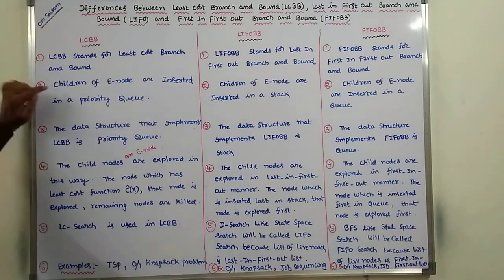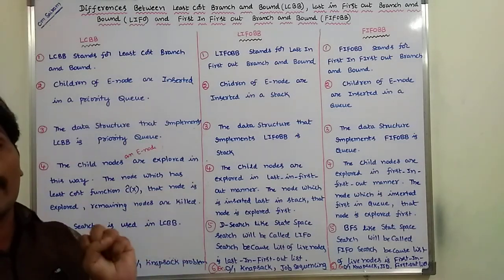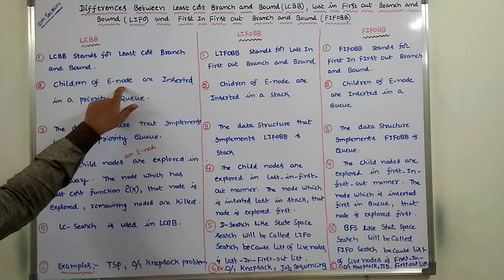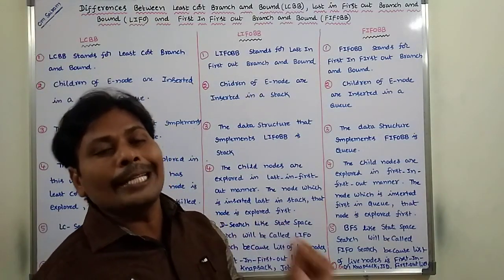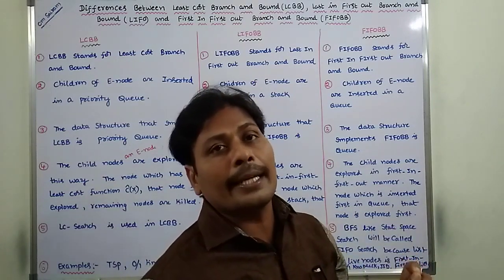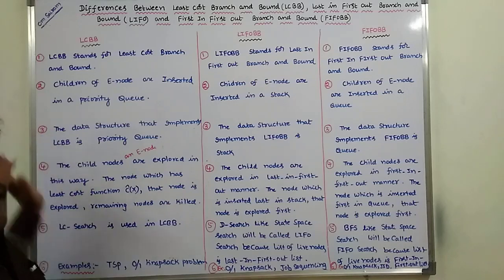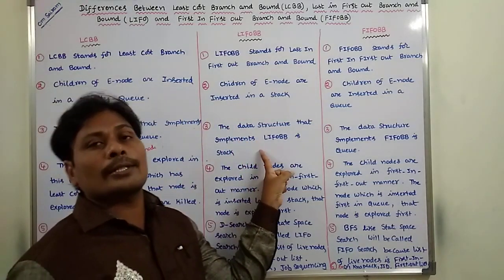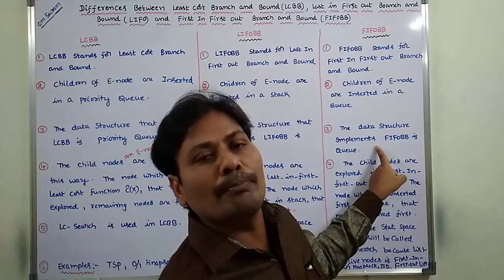In LCBB, the children of an E node are inserted in a priority queue. In LIFOBB, the children of an E node are inserted in a stack. In FIFOBB, the children of an E node are inserted in a queue. The data structure used for implementing least cost branch and bound is a priority queue. The data structure that implements LIFO branch and bound is a stack, and the data structure that implements FIFO branch and bound is a queue.